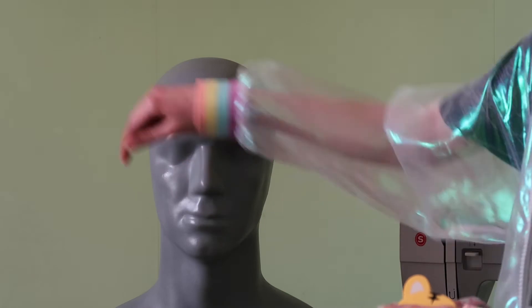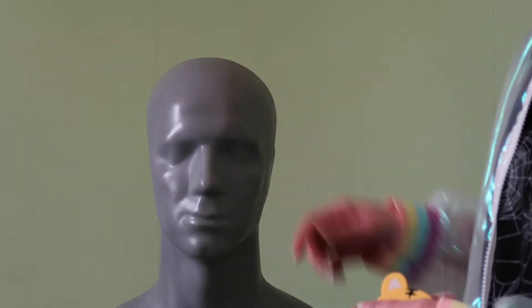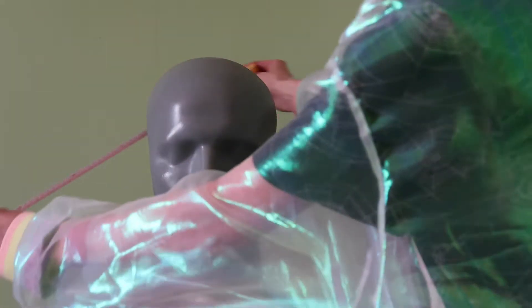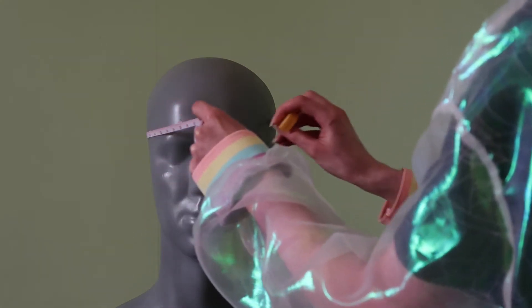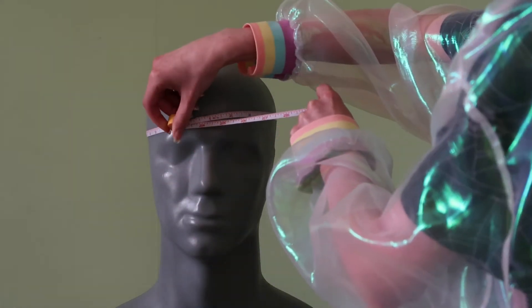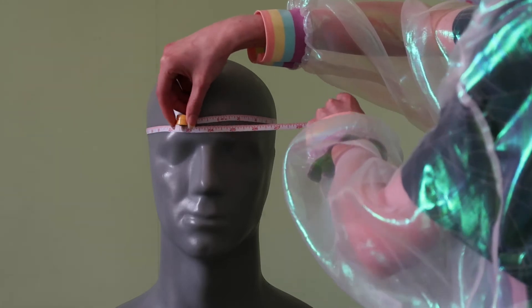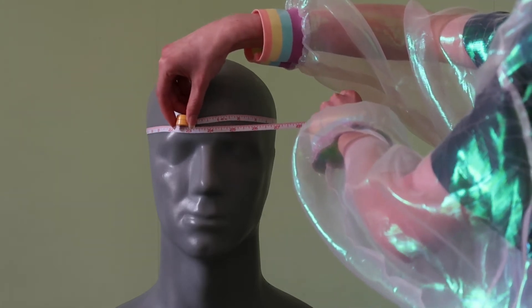The first measurement we're going to take is the circumference of the head. Take the tape measure and bring it around the back of the head and line it up. This particular mannequin head is 23 and a half inches.